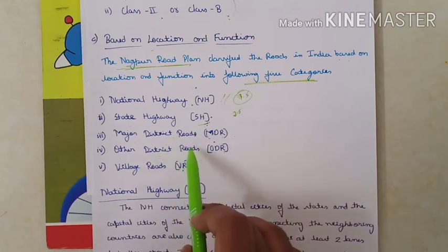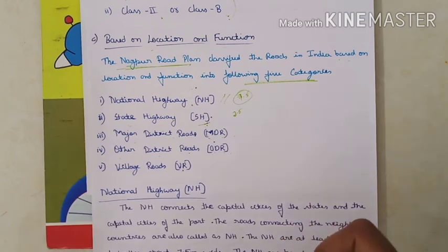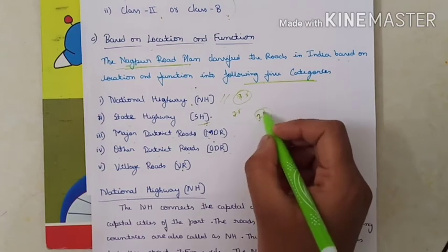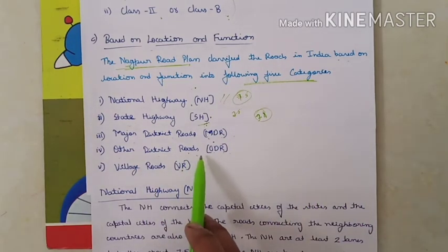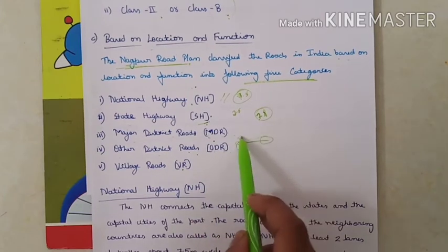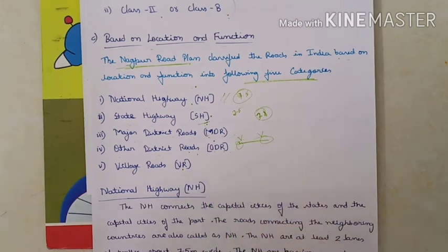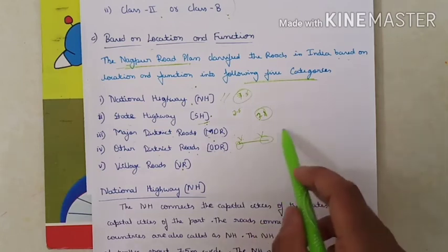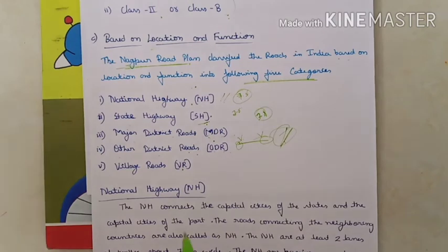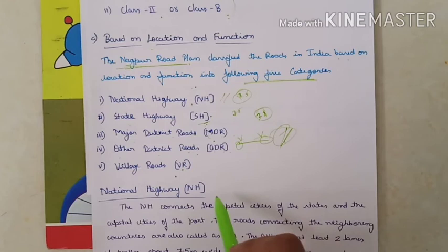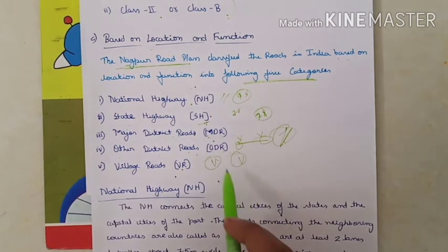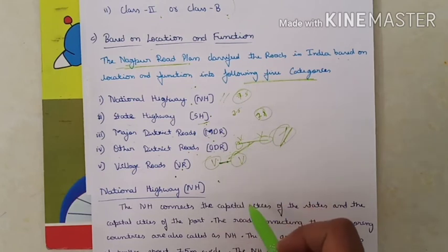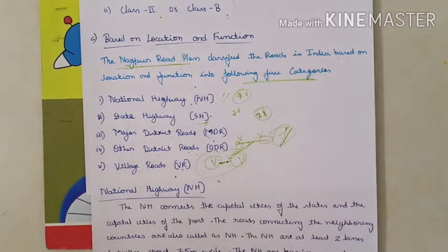Major District Roads should have at least a metal single-lane carriageway of 3.8 metres and carry mixed traffic. Other District Roads connect villages to other villages or the nearest district roads. This road has a single lane with mixed traffic. Village Roads connect village to village and to nearby district roads, and also carry mixed traffic.